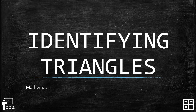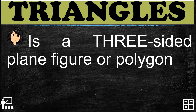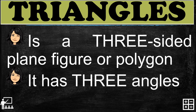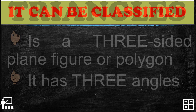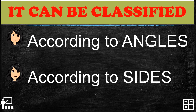This video lesson is about identifying triangles. In my previous lesson I gave examples of three triangles, but in this video I'm going to identify each triangle. A triangle is a three-sided plane figure or polygon, and it has three angles. Triangles can be classified according to angles and according to sides.